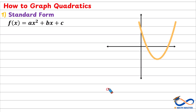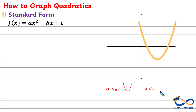If the number a is positive or greater than zero, then the parabola will open upward. And when a is negative, then the graph will open downward.